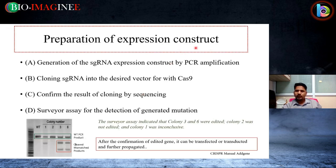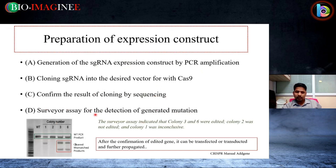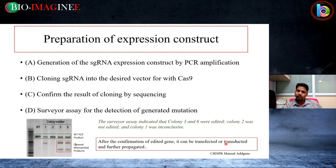For preparation of expression construct: first, generate the single guide RNA expression construct by PCR amplification. Clone the single guide RNA into the desired vector with Cas9 nuclease. Confirm the result by sequencing. Also perform surveyor assay for detection of generated mutations. The surveyor assay indicates which colonies were edited — for example, colony 3 and 6 were edited, while colony 2 was not. After confirmation of the edited gene, it can be transfected or transduced and further propagated, whether for transient or stable expression.